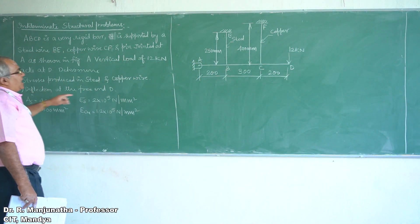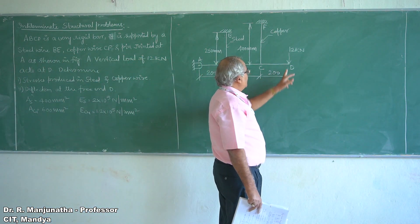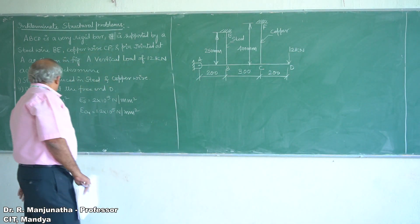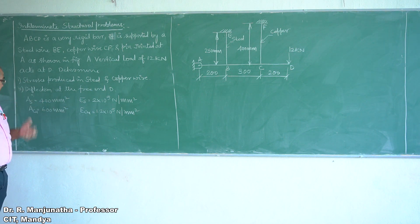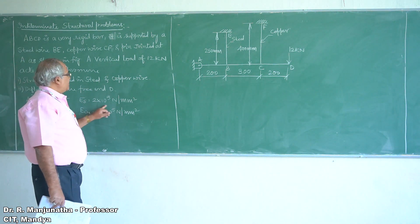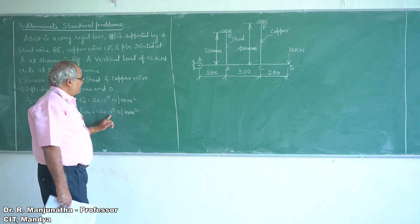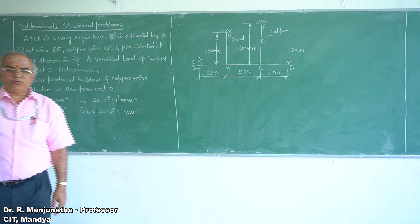We also need to find the deflection at the free end. The given data: area of cross-section of the steel wire is 400 mm², area of copper wire is 600 mm², Young's modulus of steel is 2×10⁵ N/mm², and Young's modulus of copper is 1.2×10⁵ N/mm².